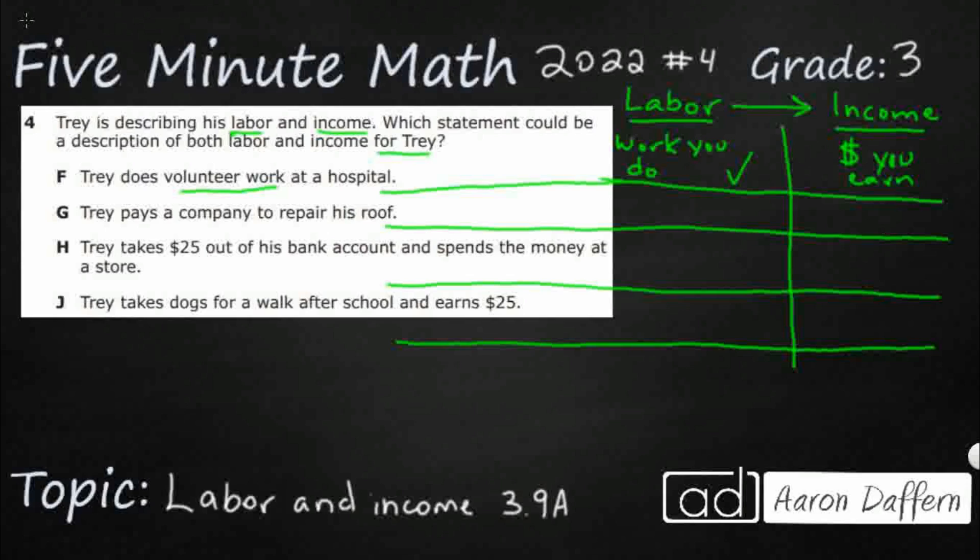But here's the key. Look at this. Volunteer. Volunteer means you're not doing it for money. You get zero pay. You're just doing it for volunteer hours. You're doing it because you're nice. So, there is no income.